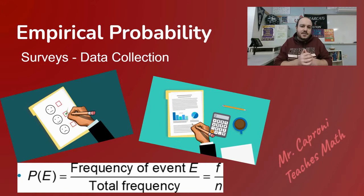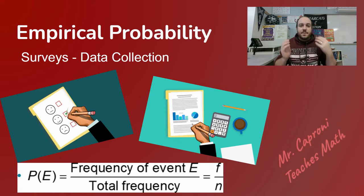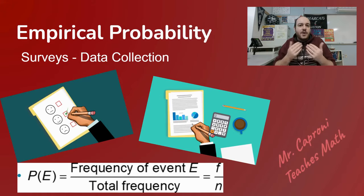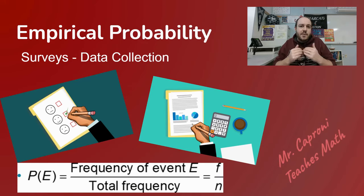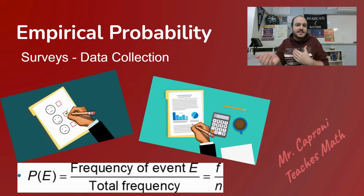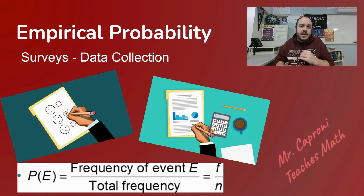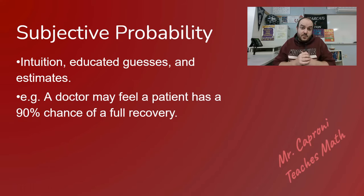For example, if you ask a thousand people what their favorite holiday is and find that 22 percent say Thanksgiving, then if you pick a person at random you would expect the probability of them saying Thanksgiving to be 22 percent — based purely off the data you previously collected.